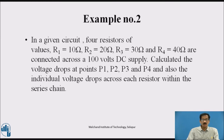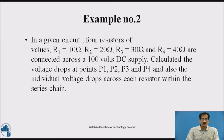Example 2: In a given circuit, 4 resistors of value R1 = 10 ohm, R2 = 20 ohm, R3 = 30 ohm, R4 = 40 ohm are connected across a 100 volt DC supply. Calculate the voltage drop at points P1, P2, P3, and P4, and also the individual voltage drop across each resistor within the series chain.